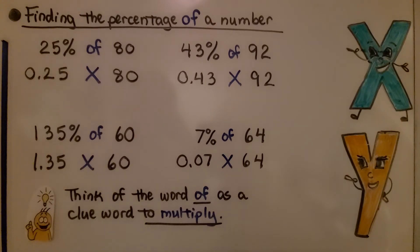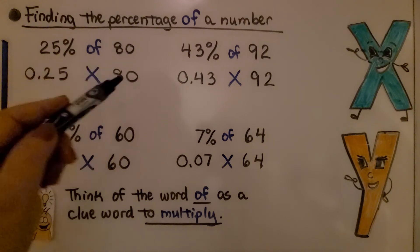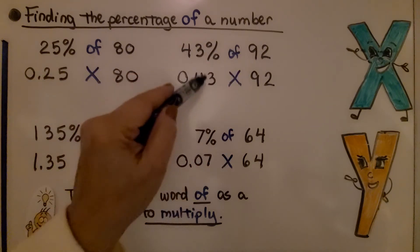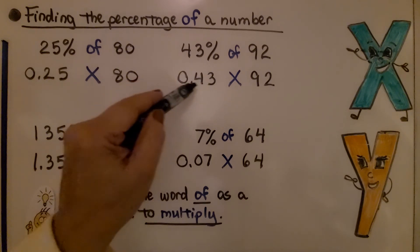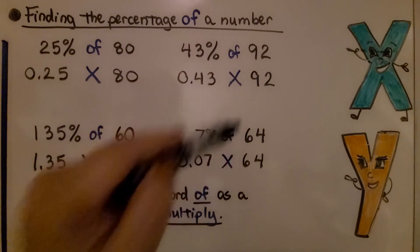For finding the percentage of a number, we have 25% of 80. We write 25% in its decimal form as 0.25, and we think of the word of as a clue word to multiply. So we have 0.25 times 80. For 43% of 92, we write the 43% in its decimal form. We have 0.43 times 92.